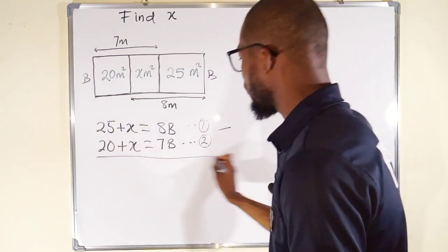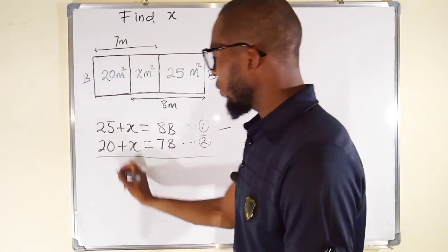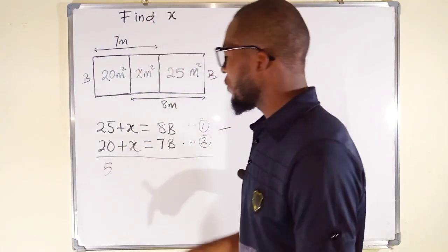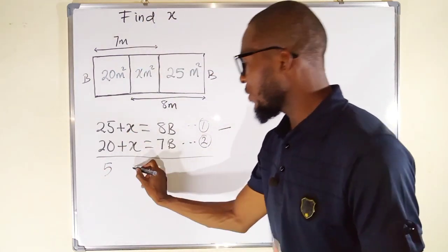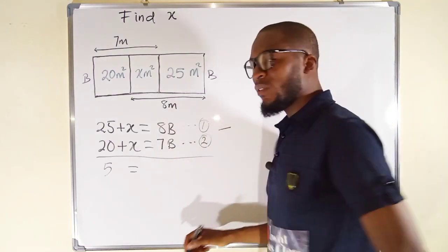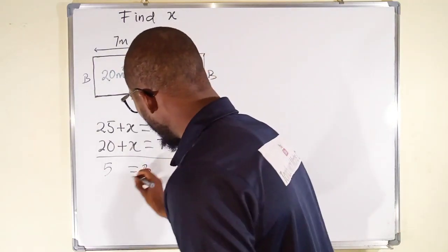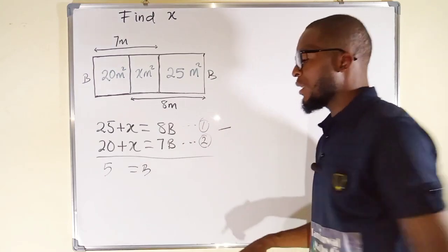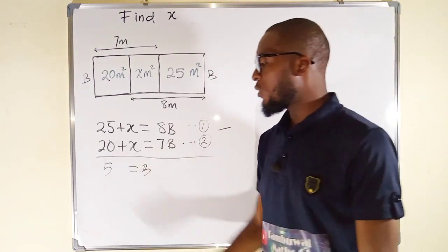25 minus 20 is 5. X minus X is 0. So, we have nothing here. But to the right, we have 8B minus 7B is just B. You can see that directly we have obtained the value of B to be equal to 5. You know this is going to be 5 meter.